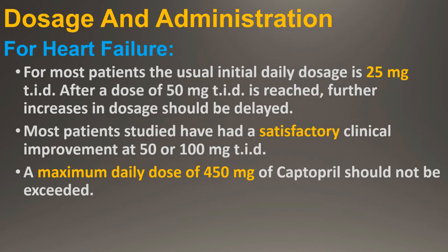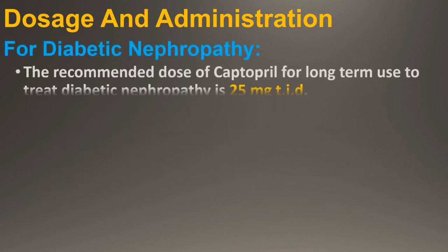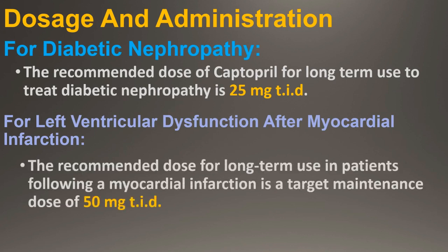For diabetic nephropathy, the recommended dose of Captopril for long-term use is 25 mg three times a day. For left ventricular dysfunction after myocardial infarction, the recommended dose for long-term use in patients following a myocardial infarction is a target maintenance dose of 50 mg three times a day.